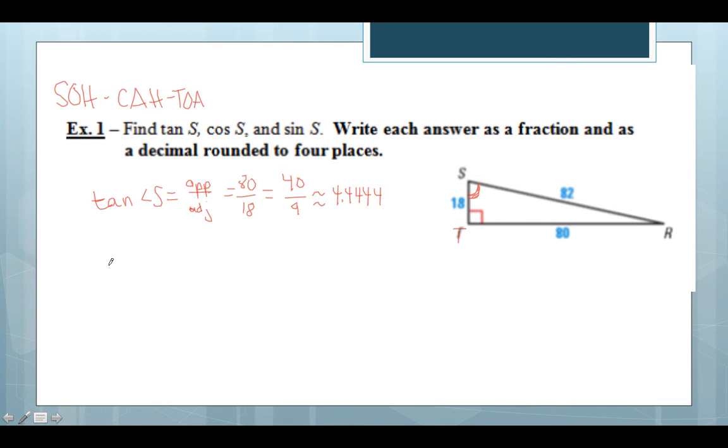Let's repeat that for the cosine of angle S. So the cosine or the CAH part of our SOH-CAH-TOA is A over H which stands for adjacent over hypotenuse. So still referencing the acute angle S, adjacent to that would be 18 and the hypotenuse is 82. So our ratio is 18 over 82 which simplifies to be 9 compared to 41 or approximately 0.2195.